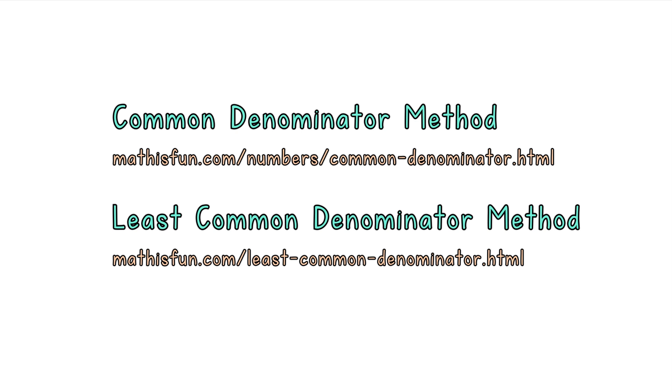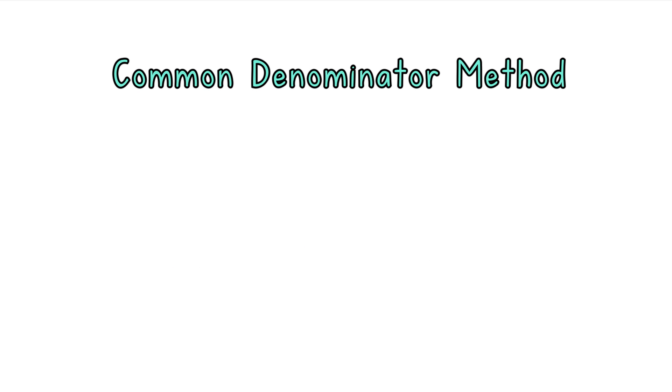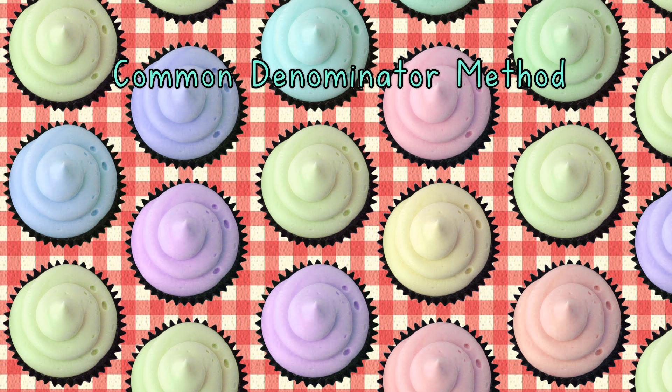Here is an example using the common denominator method. You are going to make and sell cupcakes. A friend can supply the ingredients if you give them 1/3 of sales, and a market stall costs 1/4 of sales. How much is that altogether?